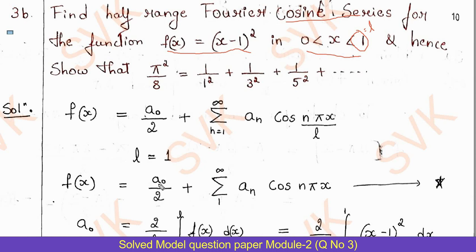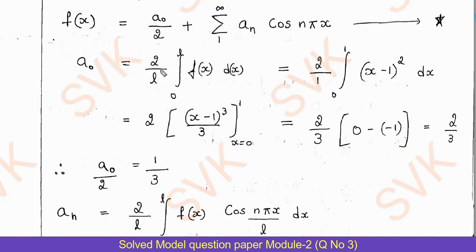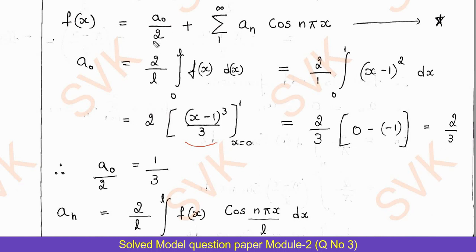Find a₀: a₀ = (2/l) ∫₀^l f(x) dx = 2 ∫₀^1 (x-1)² dx. Integrating: (x-1)³/3 from 0 to 1. Upper limit: (1-1)³/3 = 0; lower limit: (0-1)³/3 = -1/3. So a₀ = 2·(0 - (-1/3)) = 2/3. Therefore a₀/2 = 1/3.